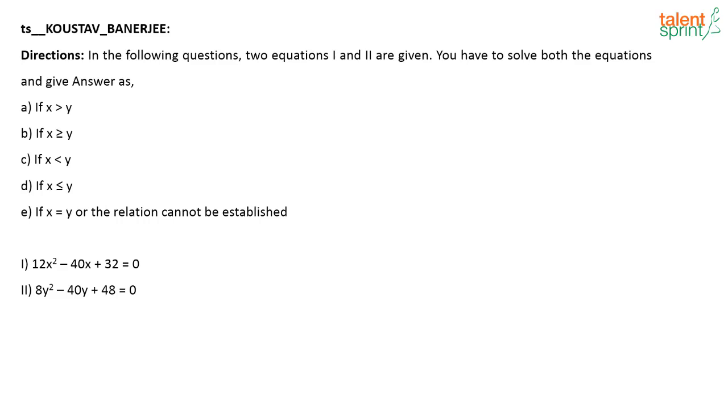So I understand why Koustav would have said this, because of the fact that see here you have to do 12 into 32, correct? So how do you generally solve such questions on equations? See, you have 12x² - 40x + 32 = 0. So how will we do generally? We will say product of two numbers is 12 into 32 and the sum of the two numbers is 40, and then we find out what are the two numbers whose product is this and whose sum is this.